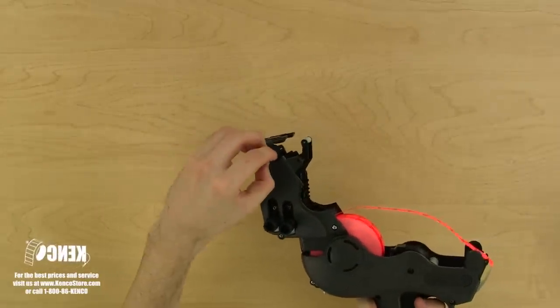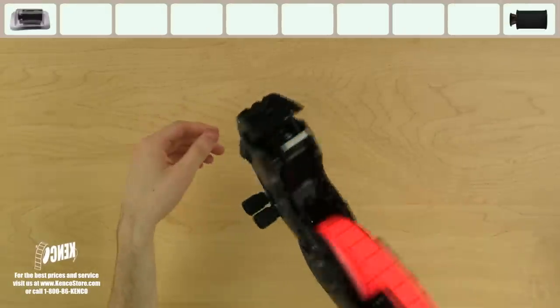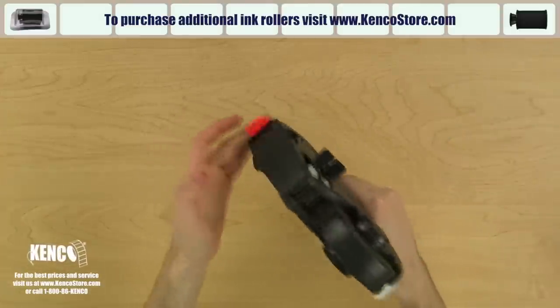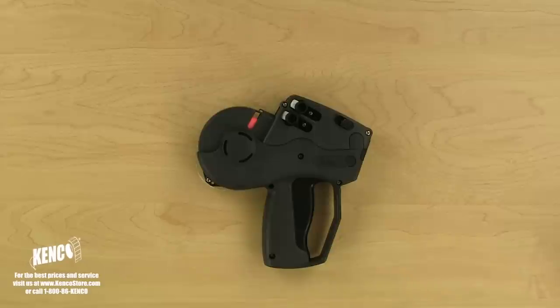Once the ink roller is removed, we will get our replacement ink roller from its packaging and slide it onto the ink roller rod. It should snap right on. Additional ink rollers can be purchased from kencostore.com. Now that we've put in the new ink roller, we can begin labeling.